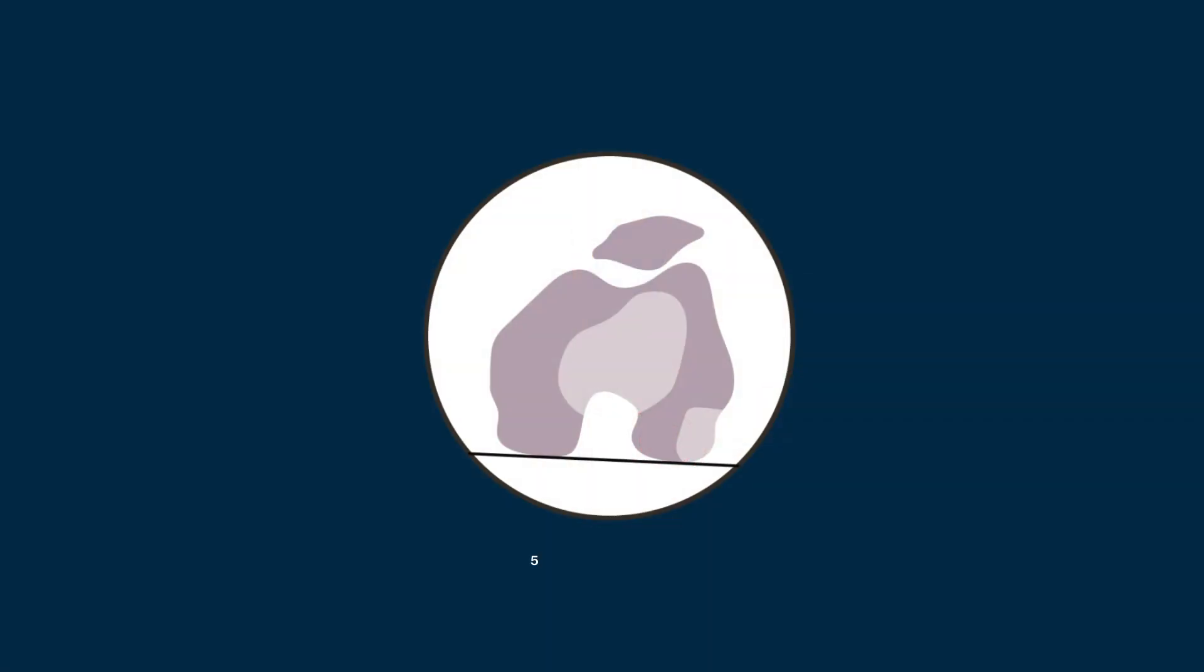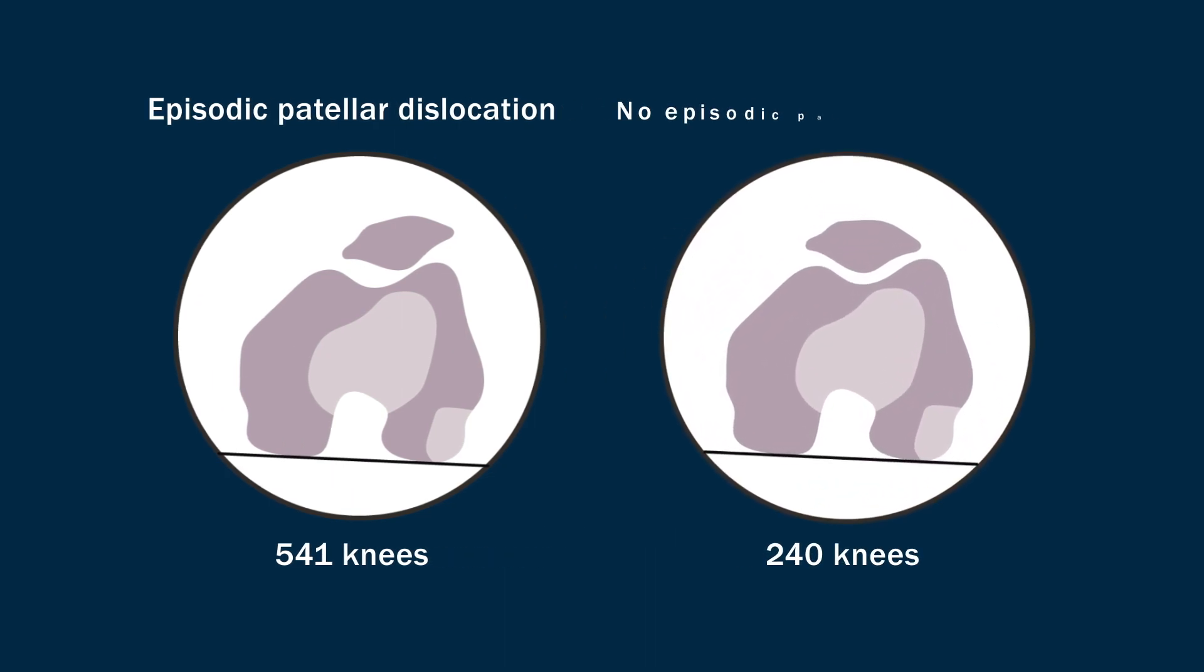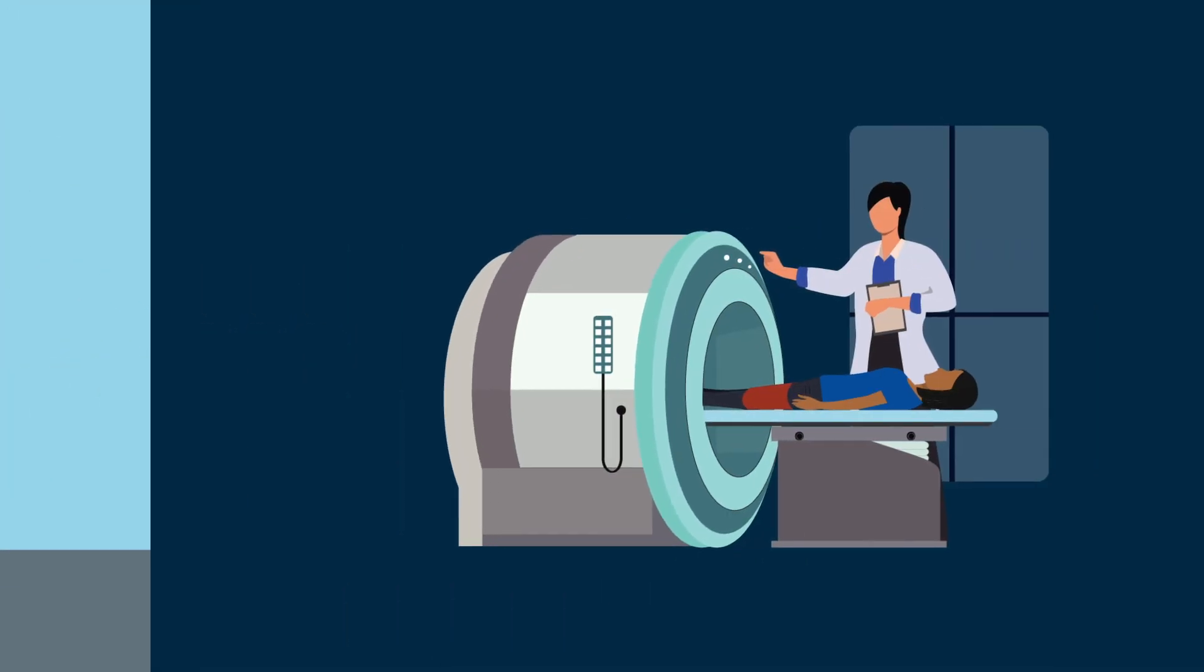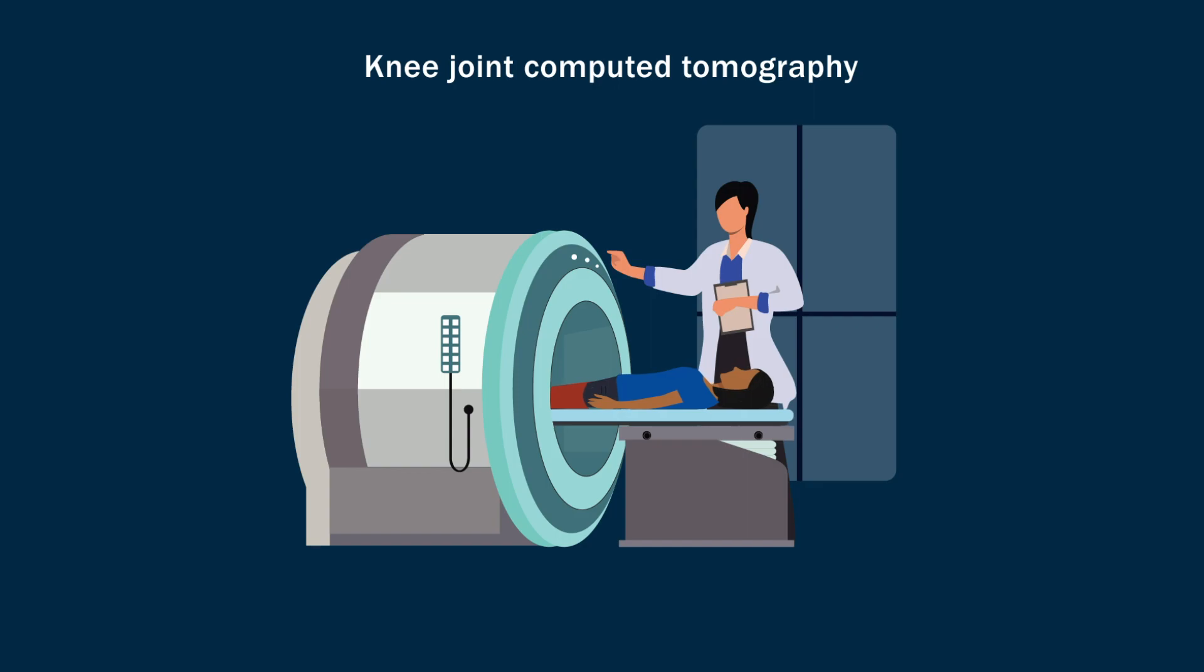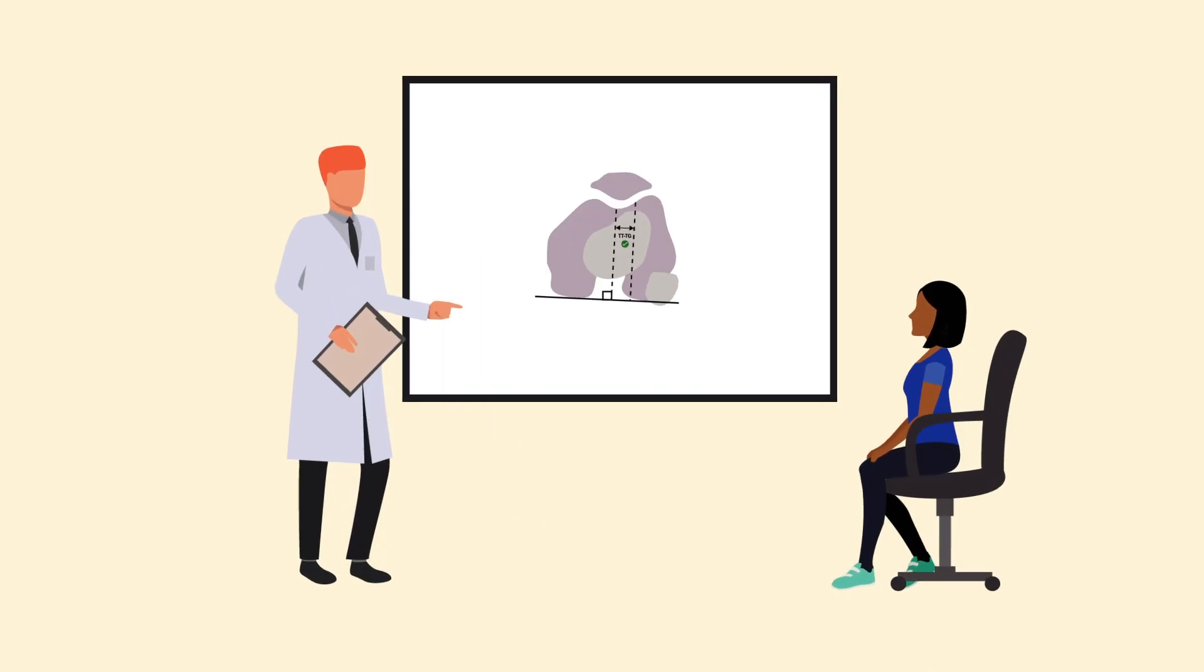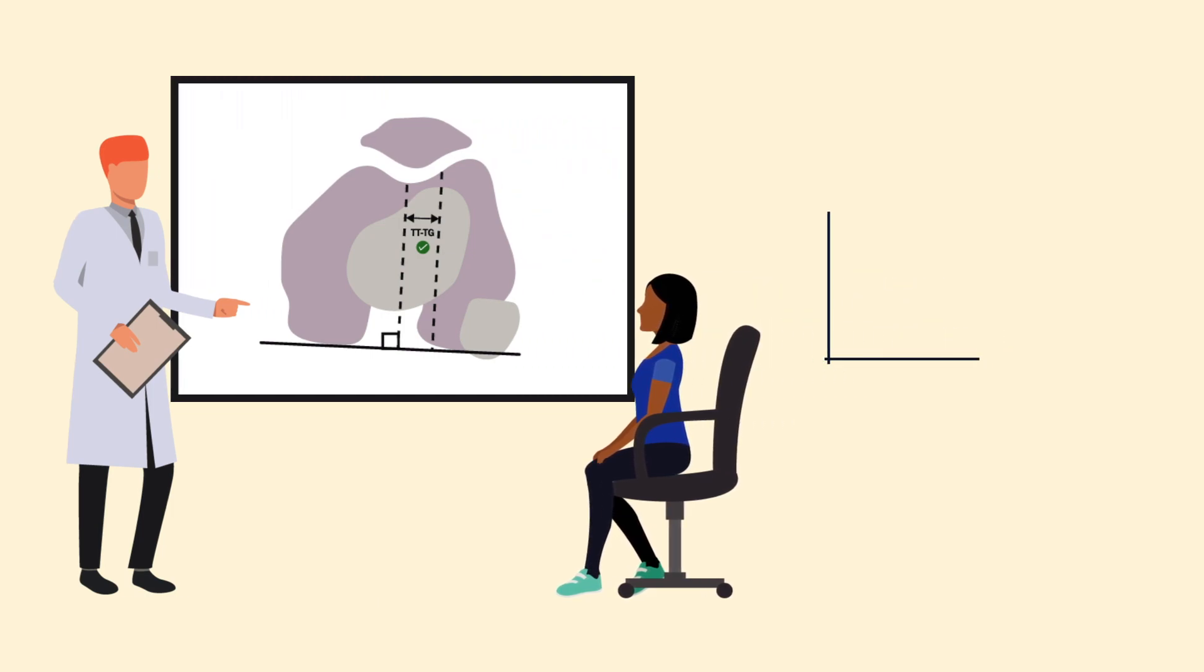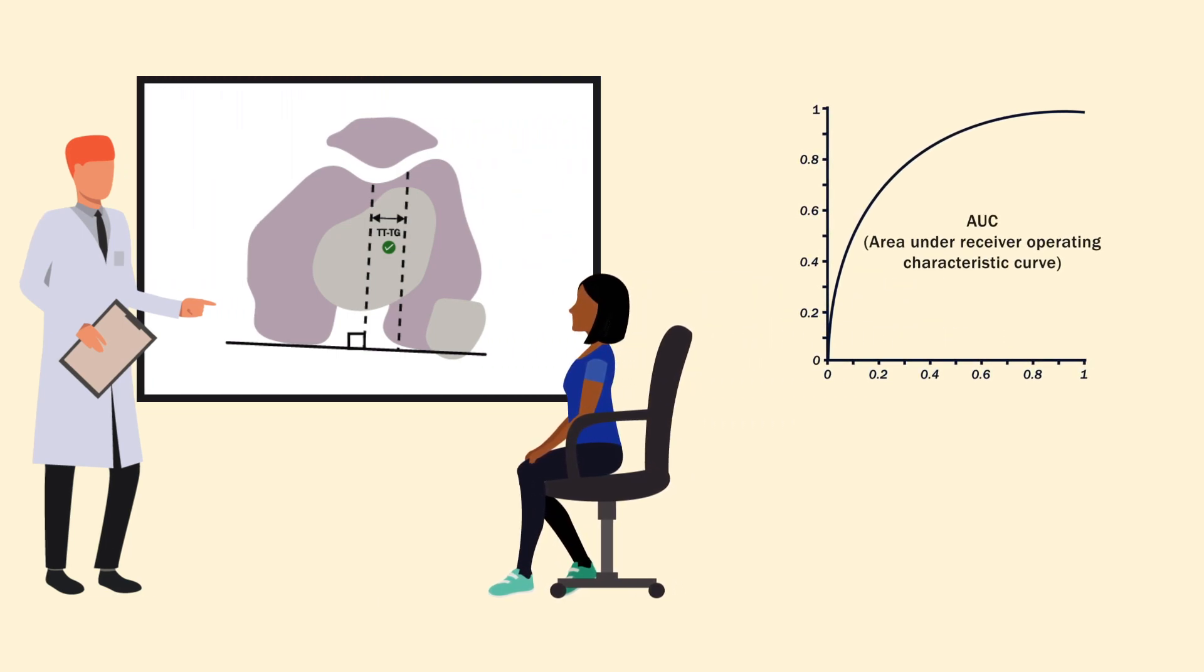In a new study, 541 knees with episodic patellar dislocation and 240 knees without episodic patellar dislocation were retrospectively analyzed by researchers from China using computed tomography images of the knee joint. The TTTG distance demonstrated the best diagnostic performance and had a significantly better area under the receiver operating characteristic curve in comparison with other parameters.